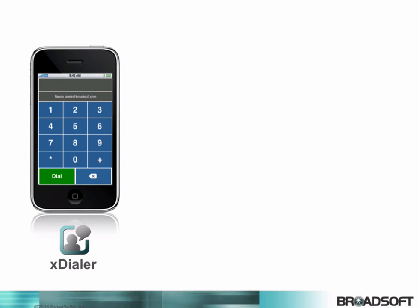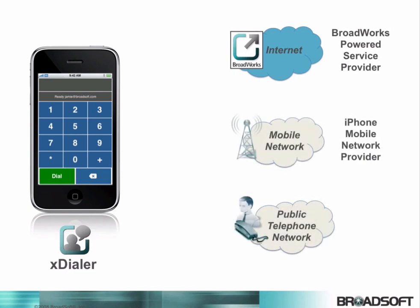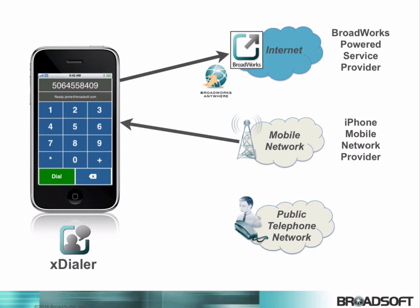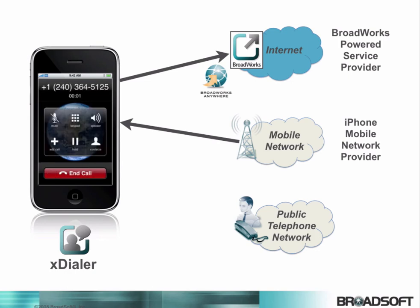Here is how it works. When you start the Xtyler, it brings up a simple number pad interface. You enter digits and then press dial. But instead of originating the call through your iPhone service provider, the Xtyler triggers an Extended service over the internet to your Broadworks powered service provider. The Broadworks Anywhere service on your account is invoked and after a few seconds you will receive an incoming call over the mobile network. When you answer it, Broadworks Anywhere will complete the call to the number you dialed through the Xtyler.